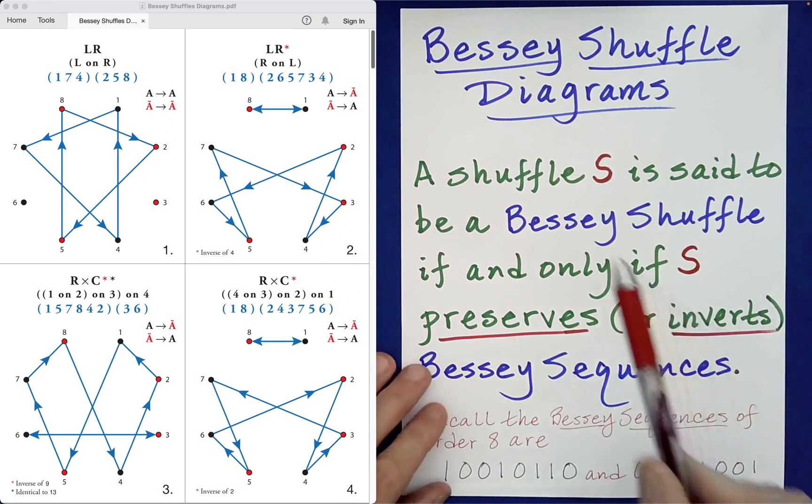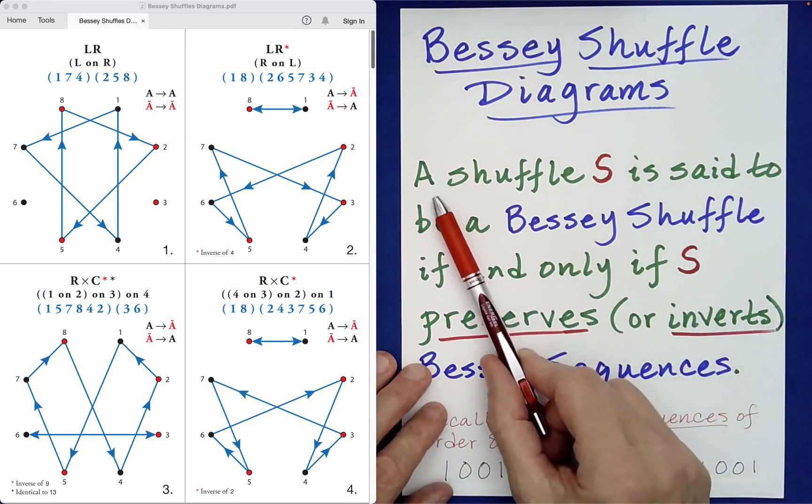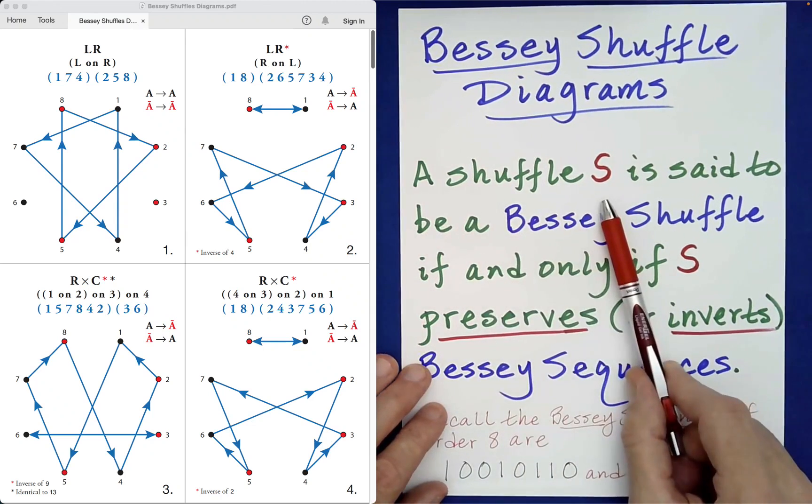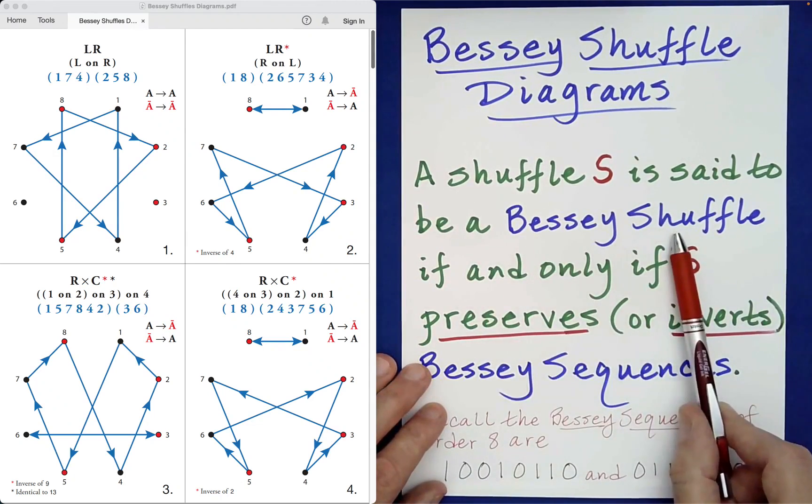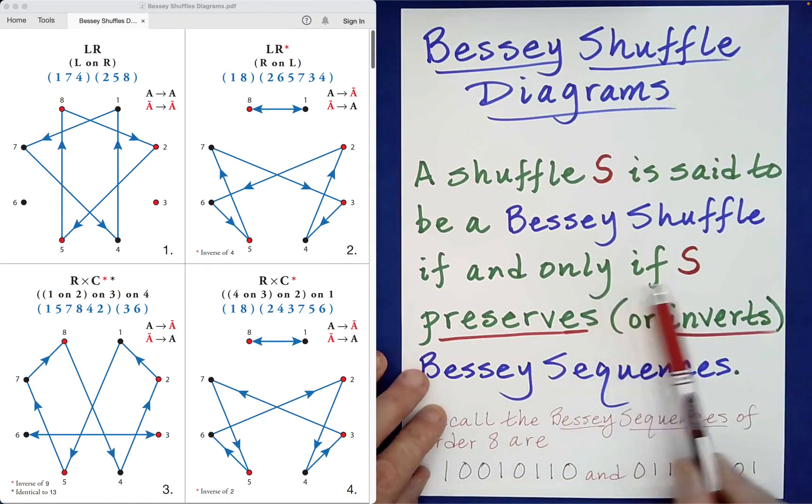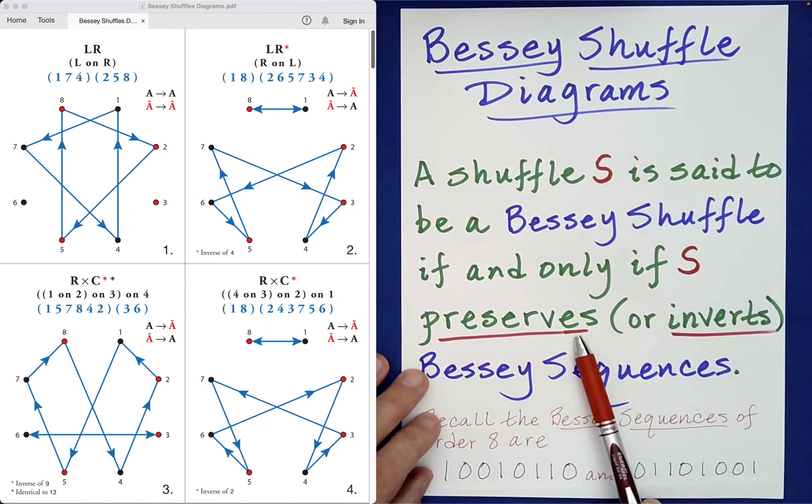As the foundational definition, we have the following: A shuffle S is said to be a Bessey shuffle if and only if S preserves or inverts Bessey sequences.